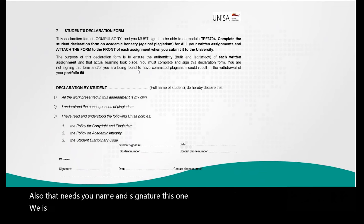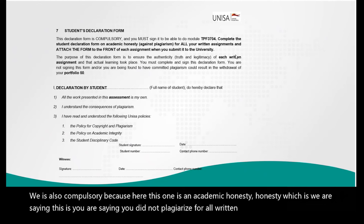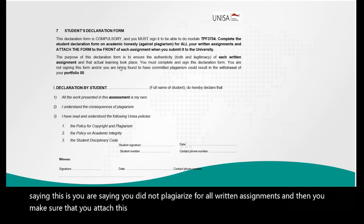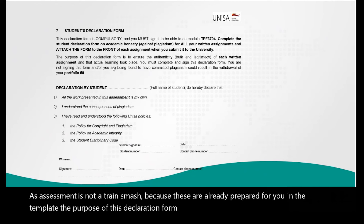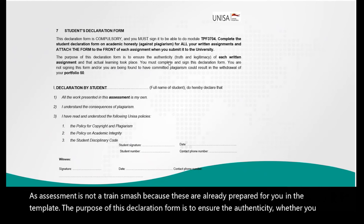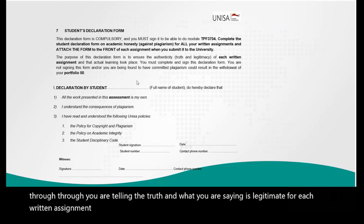This section is also compulsory — it is the academic honesty declaration, which states that you did not plagiarize for all written assignments. Make sure that you attach this form in front of the assessment. These are already prepared for you in the template, so it's not a problem. The purpose of this declaration form is to ensure authenticity and that what you are saying is legitimate. For each written assignment you declare, sign, and get a witness to sign for you.